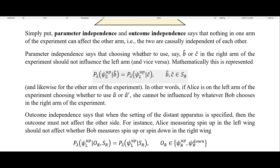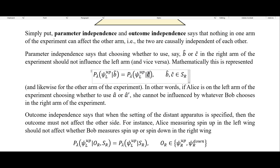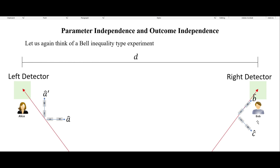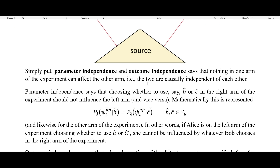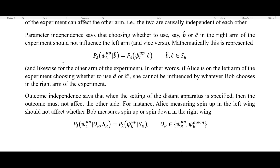Mathematically, this can be represented as: the probability that Alice on the left side gets spin up given that Bob chose B is equal to the probability that Alice gets spin up given that Bob chose C. So neither of Bob's choices should influence the left side. If Alice is on the left arm of the experiment choosing whether to use A or A prime, she cannot be influenced by whatever Bob chooses in the right arm.